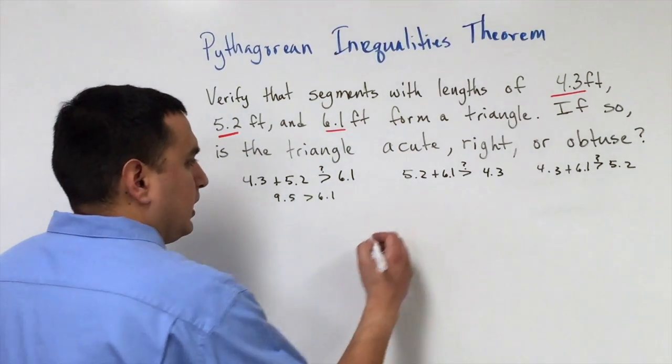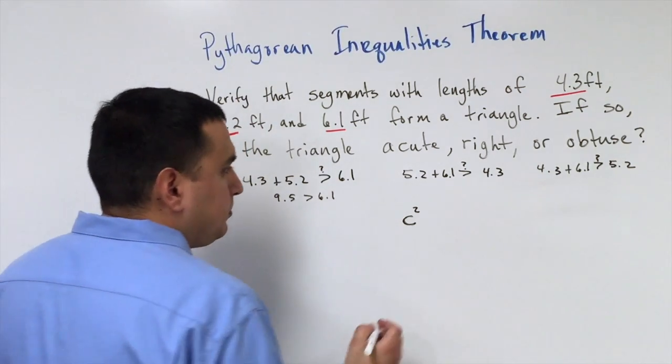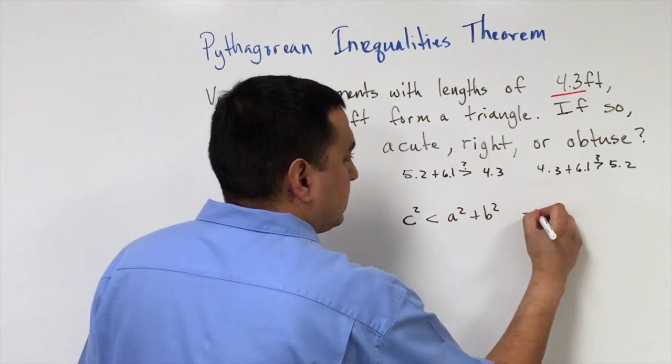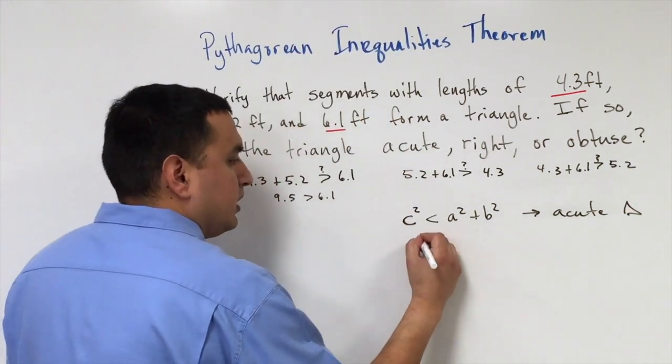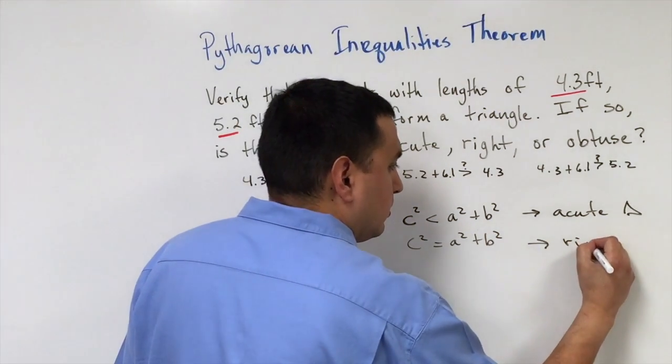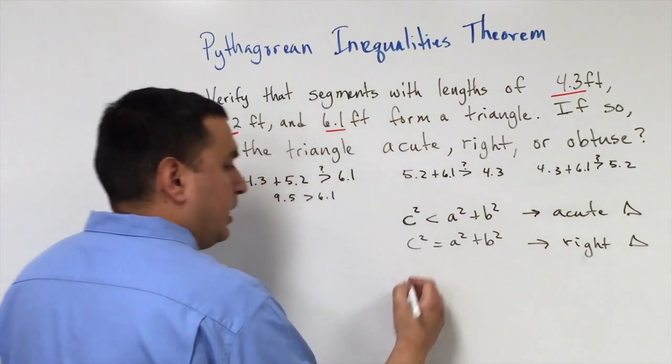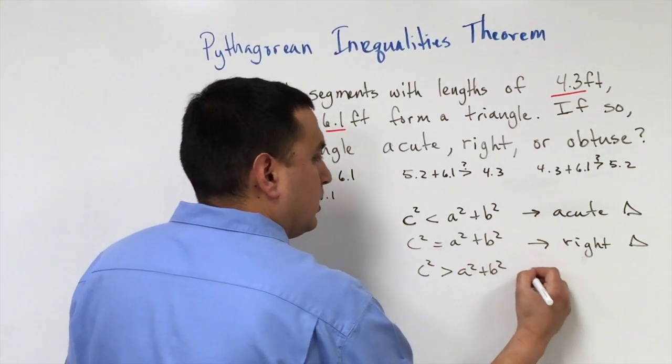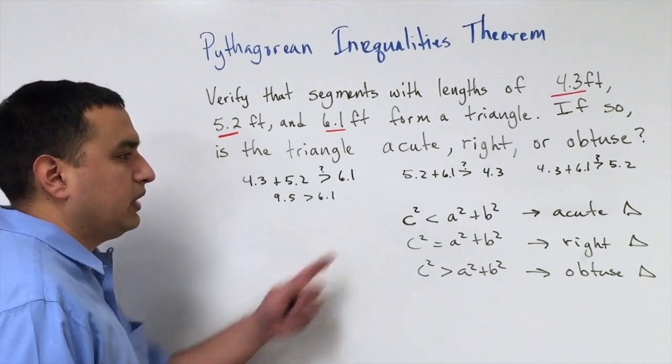What that says is that I can take the hypotenuse or the biggest side, square it. If it is less than a squared plus b squared, that's going to tell me it is an acute triangle. And obviously if c squared is equal to a squared plus b squared, that tells me it's a right triangle. And if c squared is greater than a squared plus b squared, that tells me that I have an obtuse triangle.